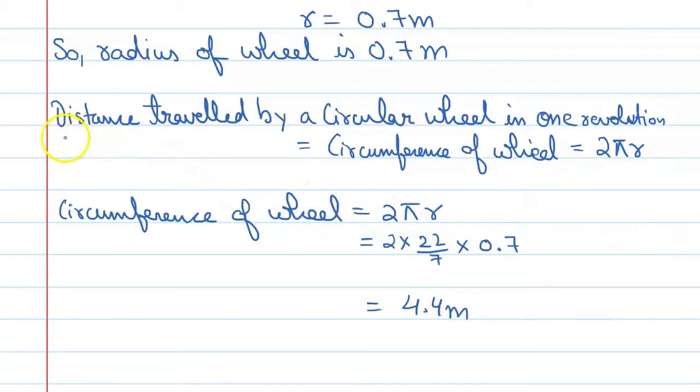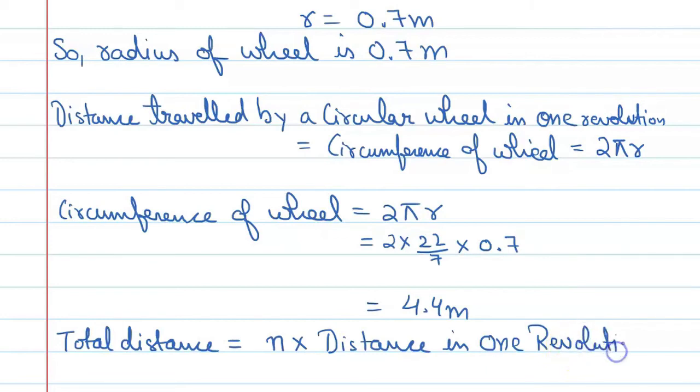If this circle completes one revolution, it will cover the circumference of the wheel, that is 2πR. In one rotation it will cover 4.4 meter distance, and total distance it has to travel is 176 meter. So if we want to find number of revolutions, we can say total distance equals number of revolutions N times distance in one revolution.